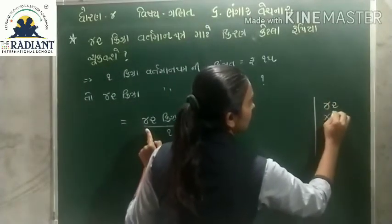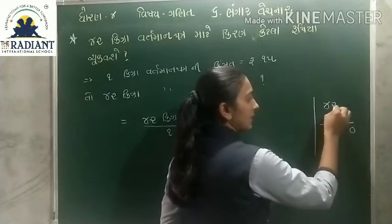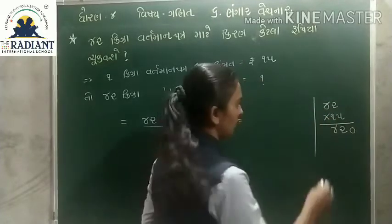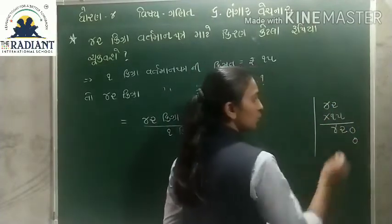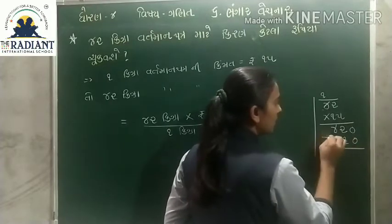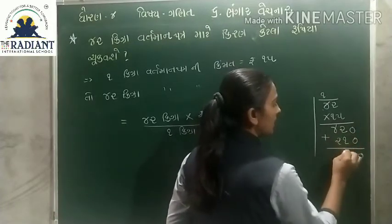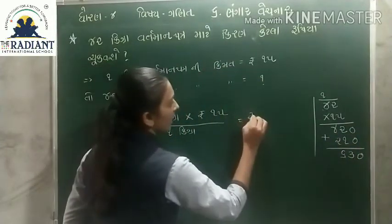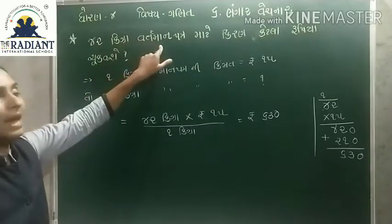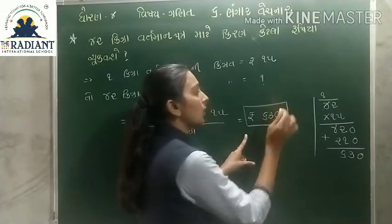42 ગુણ્યા 15. 0 સાથે 2 નો ગુણાકાર 2, 1 સાથે 4 - ચાર. ચારનો ગુણાકાર 6, 5 ડુ 10, ડુ-ત્રણ ઓન-ત. 1 પ 20 - 210. સરવાળો 0, 2, 3 ચાર ને 2, 6 - 630 આવ્યા. રૂપ્યા છ-સો-ને-30. તો કિરણ 42 કિલોગ્રામ વર્તમાન પત્ર માટે 630 રૂપ્યા ચૂકવશે.